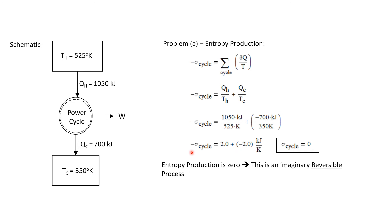Doing the math, the negative of entropy production around the cycle is 2 plus negative 2, giving units of kilojoules per kelvin. So entropy has units of energy per degree, and we always use absolute temperature scales. This tells us that the entropy production of this cycle is zero. That makes sense: if we assume this is an imaginary reversible cycle with no irreversibilities in it, then it will not produce any entropy. So when we conclude that sigma equals zero, we know we are dealing with an imaginary reversible process.